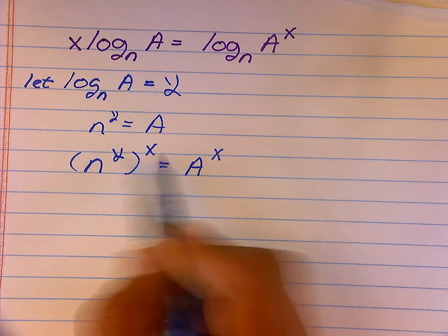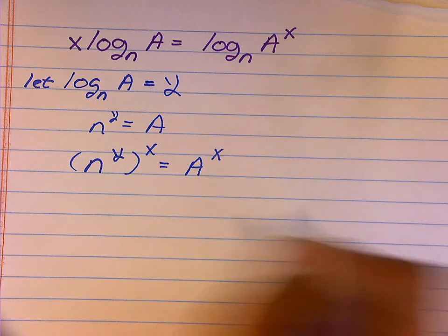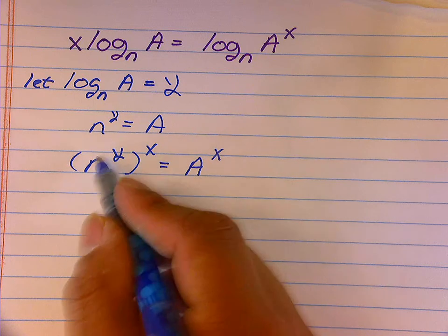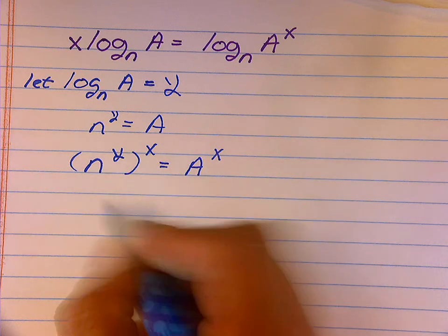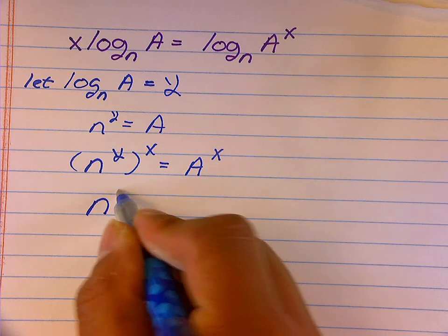According to my property of exponents, I can take these two exponents and multiply them. However, I'm going to put the x in front of the y to keep the order in alphabetic order.